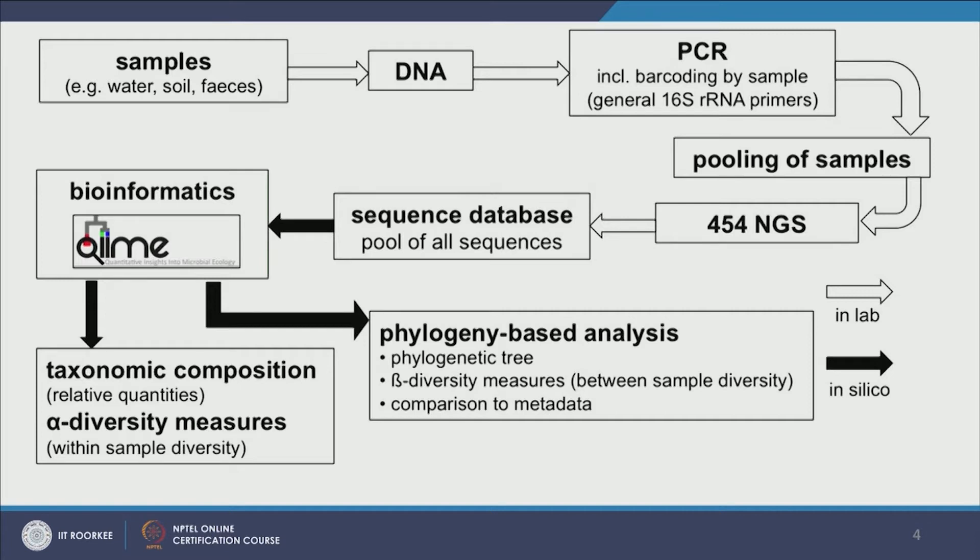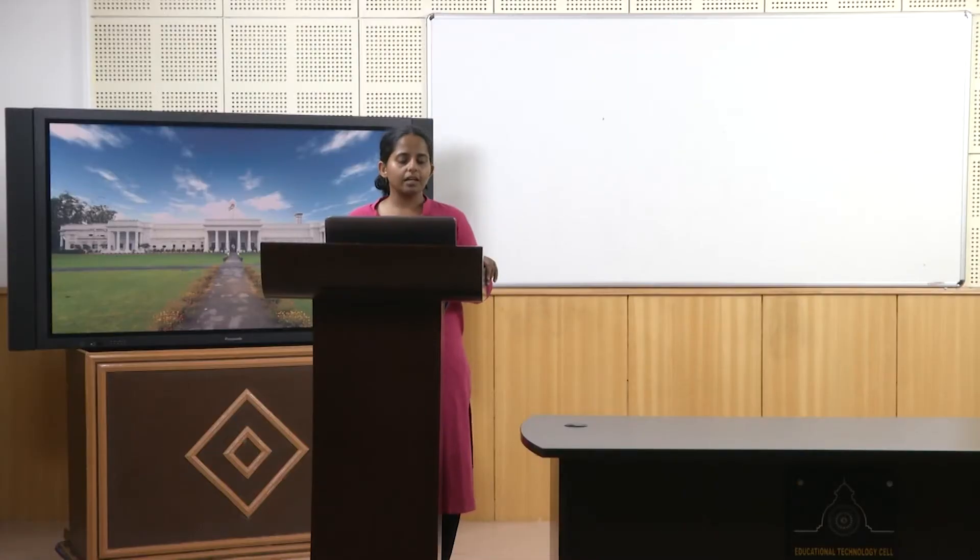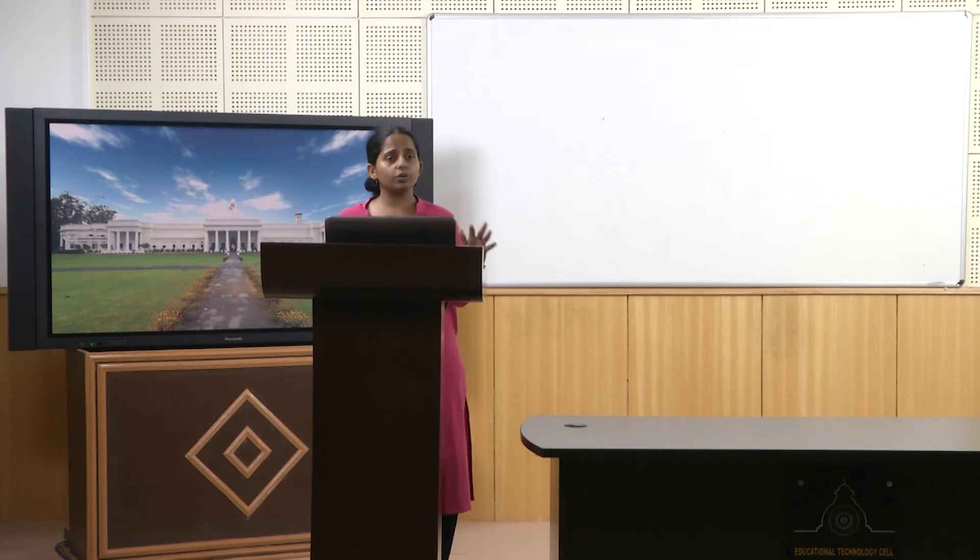All these sequences can be aligned to well-established, well-curated databases, and for each sequence we can obtain taxonomic information. For example, this sequence matches Proteobacteria, specifically Betaproteobacteria within Proteobacteria. Sometimes I get even more resolution — not only do I know it is Firmicutes, but I also know it is Clostridium within Firmicutes, and it may be similar to Clostridium thermosalum.